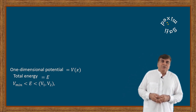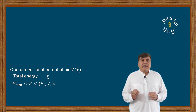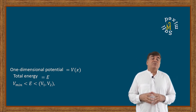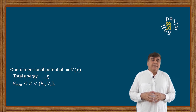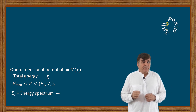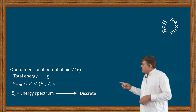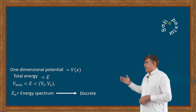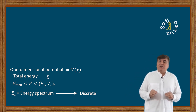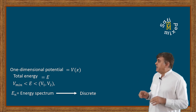Due to this boundary condition on total energy E, the acceptable wave function solutions to the time-independent Schrödinger equation correspond only to discrete energy eigenvalues. So the first property of bound states is that the energy spectrum of bound states is discrete.